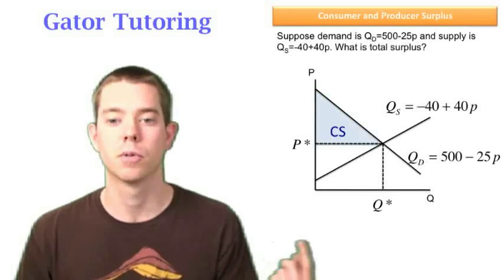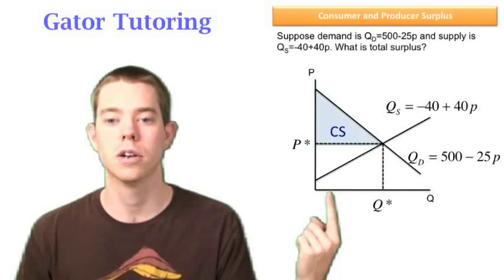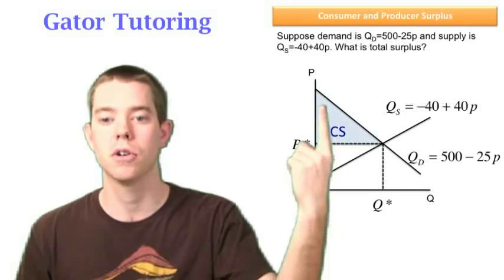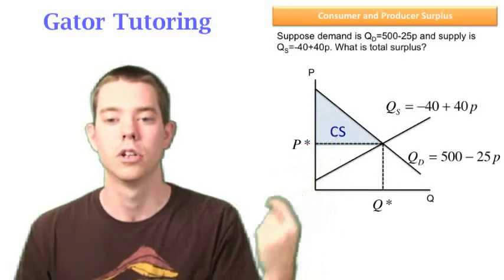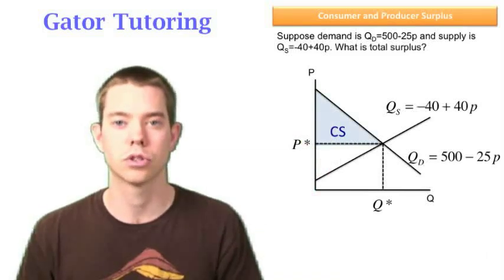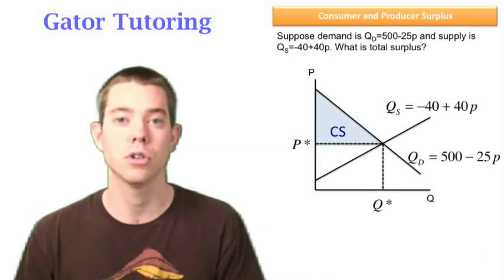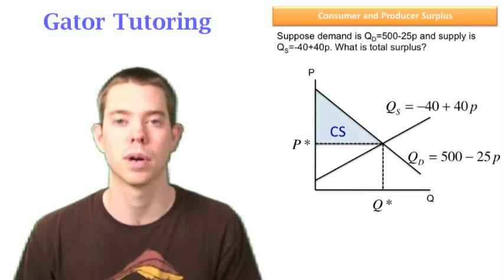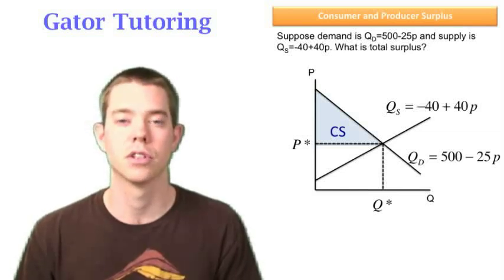Think about this: if we're trying to produce this unit right here, well it only cost us this much to buy, and we value it all the way up there. So that's true all the way until Q star. All those units are valued higher than it cost the consumer to buy it, which is the price.